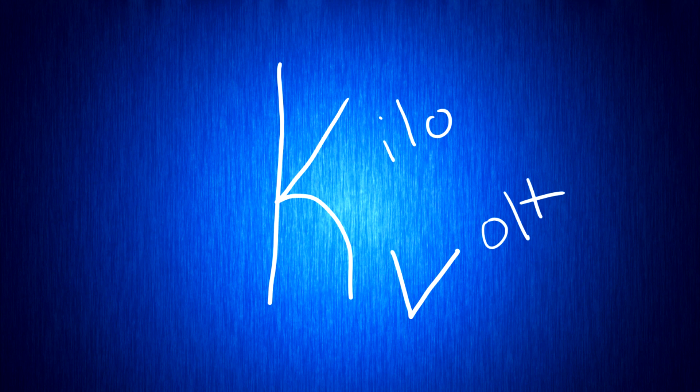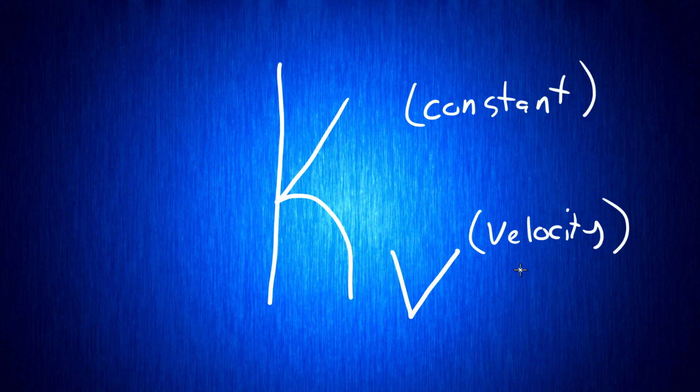Right off the bat, a lot of people may think that KV stands for kilovolts or has something to do with voltage, but that's completely wrong. The K actually means that this is a constant value and the V stands for velocity, the velocity constant for the motor.